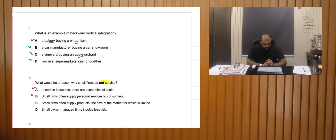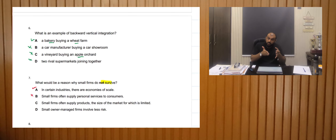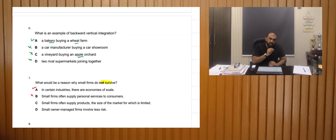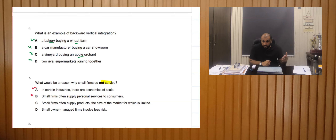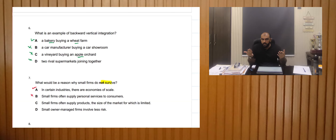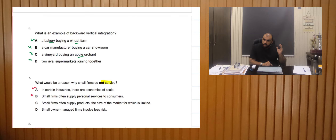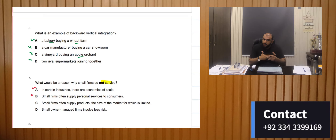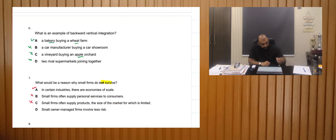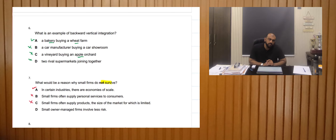Small firms often supply products for which the market size is limited — if the market size is limited, the size of firms will also be limited. For example, selling cancer treatment means a small market, whereas selling paracetamol means a large market. So if the industry size is small, small firms can survive comfortably. Small owner-managed firms involve less risk — if there is less risk, they will survive, so this is also incorrect.